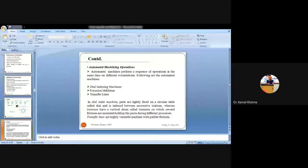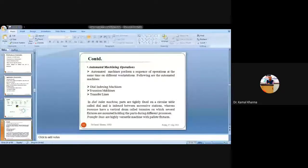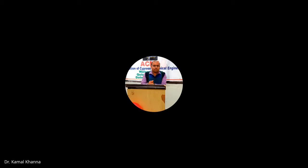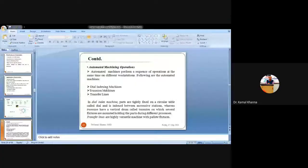Transfer lines hold different kinds of paired fixtures and can accommodate up to around 30 to 35 workstations with material storage. Tools can automatically be selected and operations performed as per the set of instructions configured at the start of the machine.